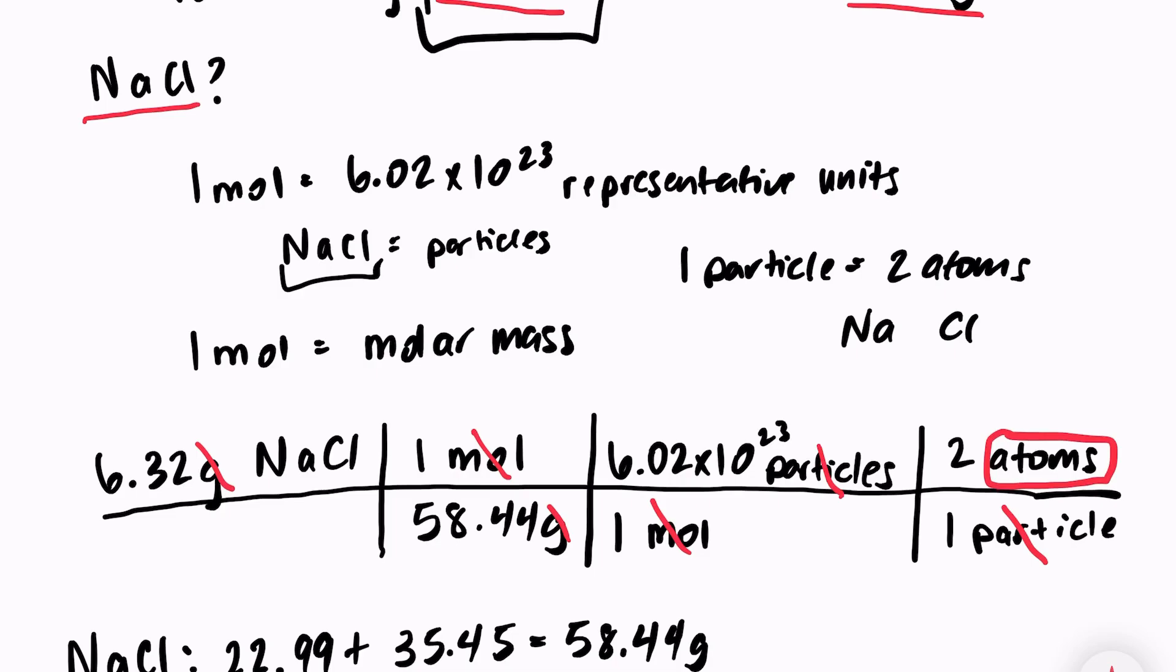So in your calculator, you should put 6.32 divided by 58.44, multiply that by Avogadro's number, and then multiply that answer by 2. And you should get 1.30 times 10 to the 23rd atoms of NaCl.